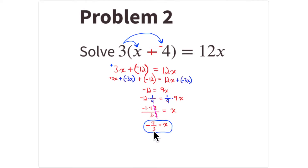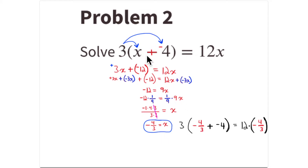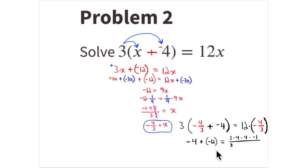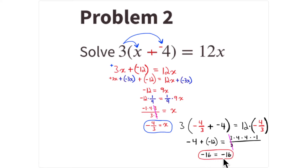Replace x with -4/3 to verify. On the left: 3 times -4/3 — the 3s cancel — gives -4, and 3 times -4 is -12, so the left side is -4 + (-12) = -16. On the right: 12 times -4/3; factoring out the 12, the 3s cancel, leaving -16. So -16 = -16. The solution x = -4/3 is verified.